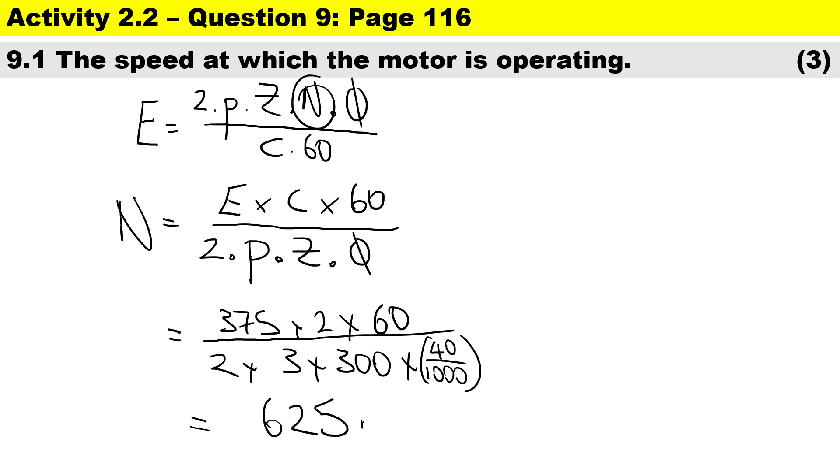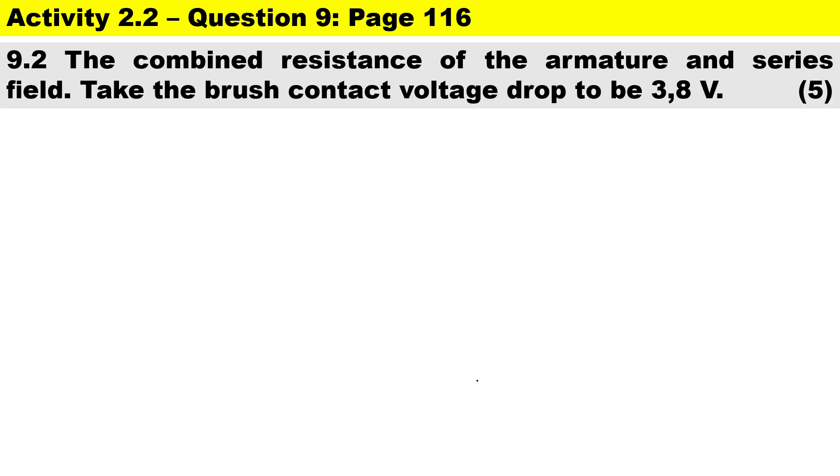Now 9.2, we need to calculate the combined resistance of the armature and series field. So let's write that down, the question is asking for Ra plus Rse together, and they want to know how much that is if the brush contact voltage is 3.8 volts.